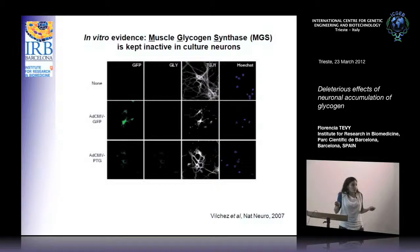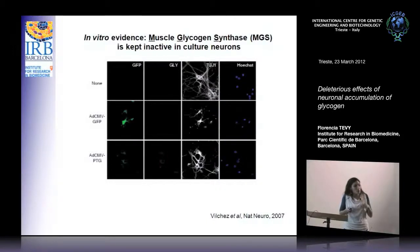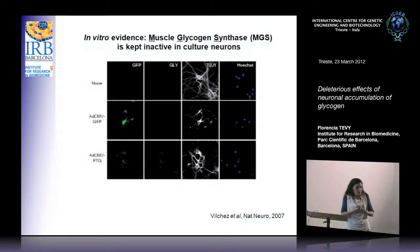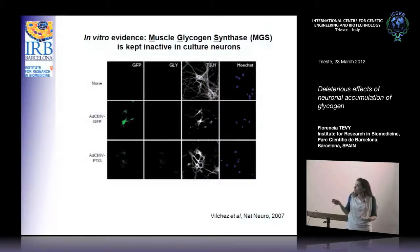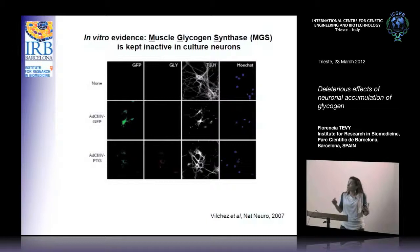The first evidence comes from in vitro work — a paper from Vilches, where he induced expression of muscle glycogen synthase in primary neuronal cultures. The protein was inactive and didn't produce glycogen. However, when he transfected primary culture neurons with PTG, the activator of glycogen synthase, he observed glycogen production. So the message was that neuronal GS is kept inactive in neuronal culture.